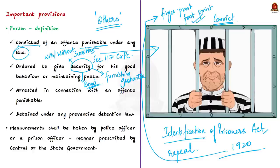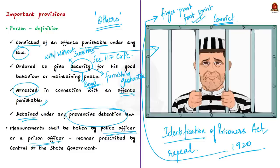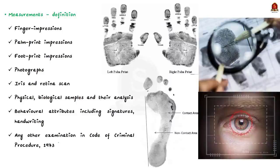Along with this, the person who has been arrested in connection with an offence punishable under any law must also give measurements. And a person detained under any preventive detention law is also required to do so. All these kinds of persons must give measurements under this bill. The measurements will be taken by a police officer or a prison officer in such manner as prescribed by the central government or the state government.